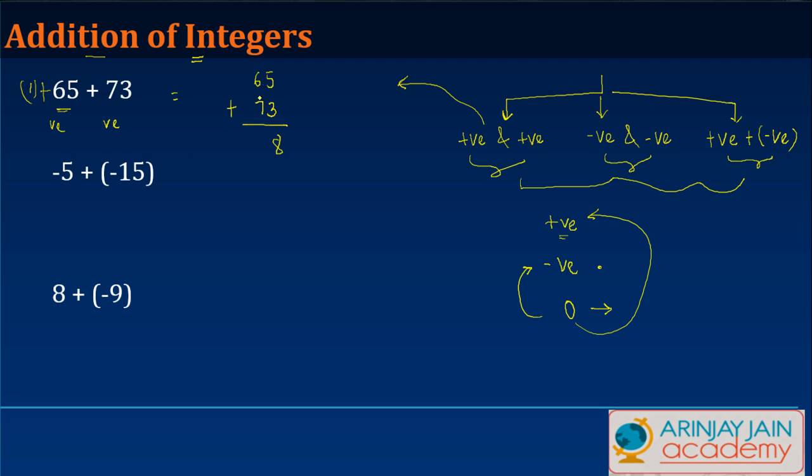5 plus 3 is 8, 6 and 7 is 13. And when you do that, you add the sign of plus. Why? Because both the numbers were positive. Their sum is also positive.